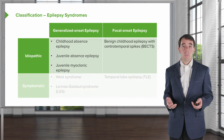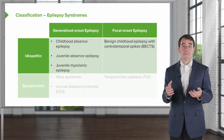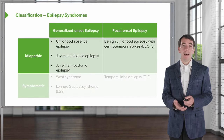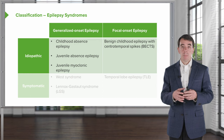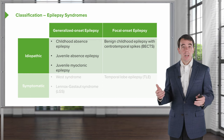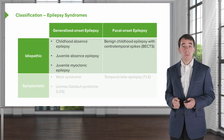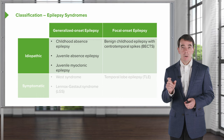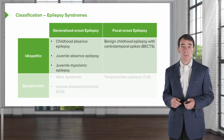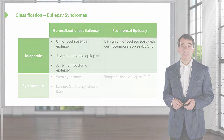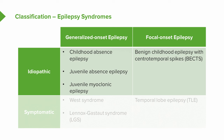In this lecture, we're going to talk about a few of the most common epilepsy syndromes — the ones you may see clinically or encounter on a clinical vignette. As discussed, we can categorize them as generalized or focal in onset, and as idiopathic or symptomatic.